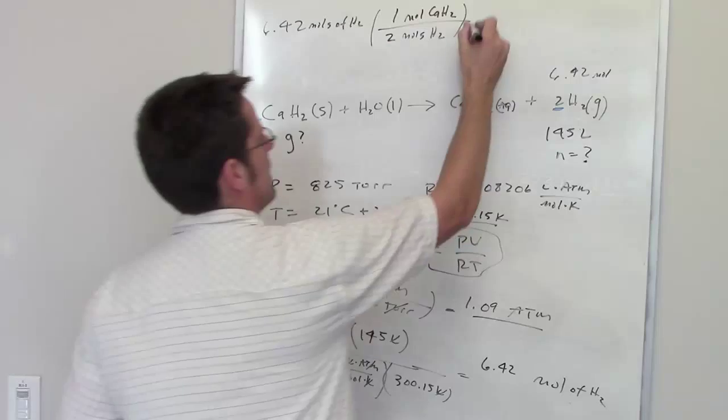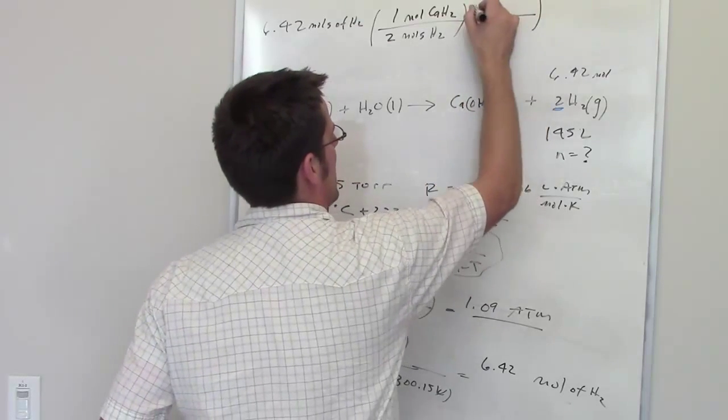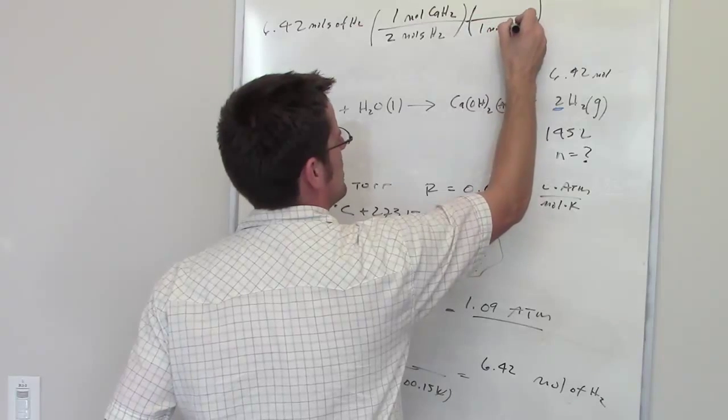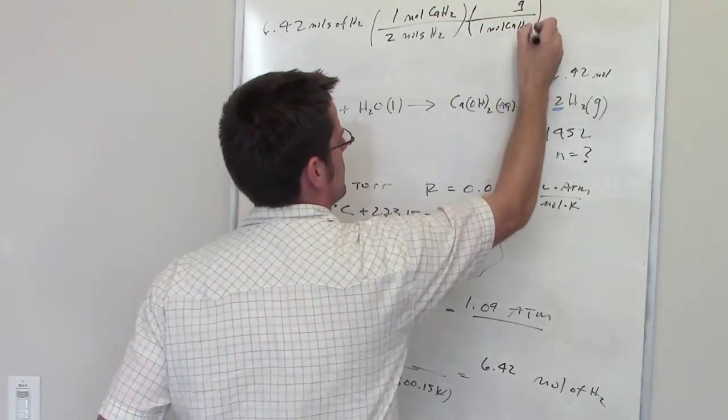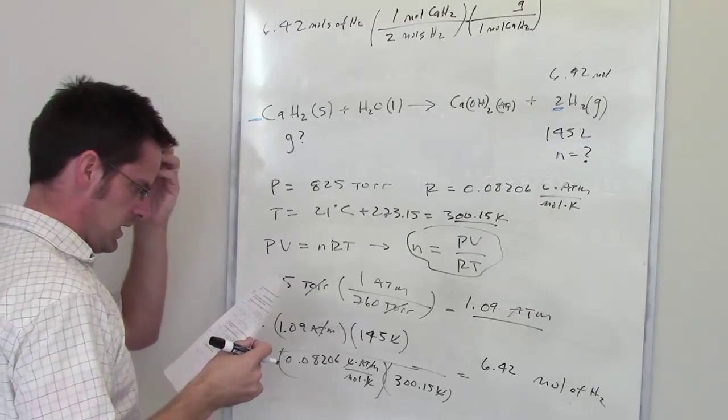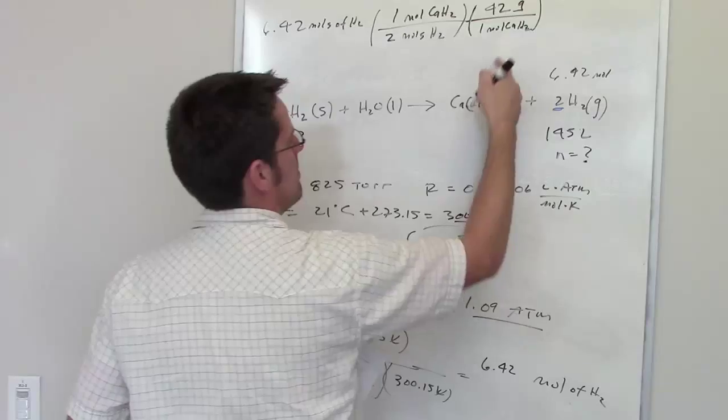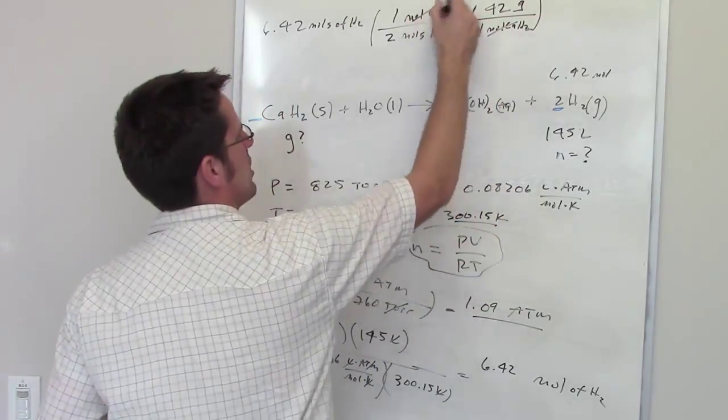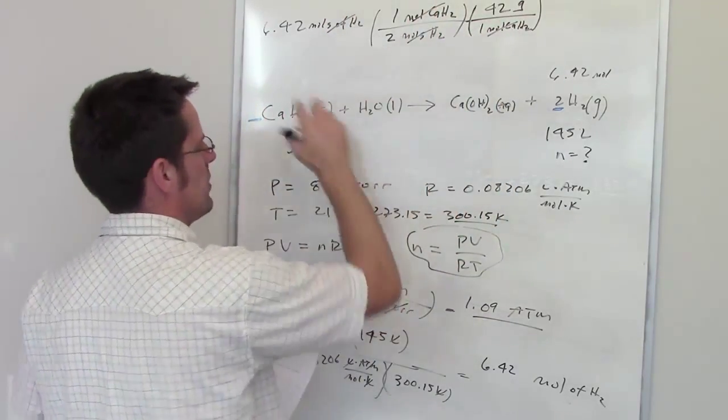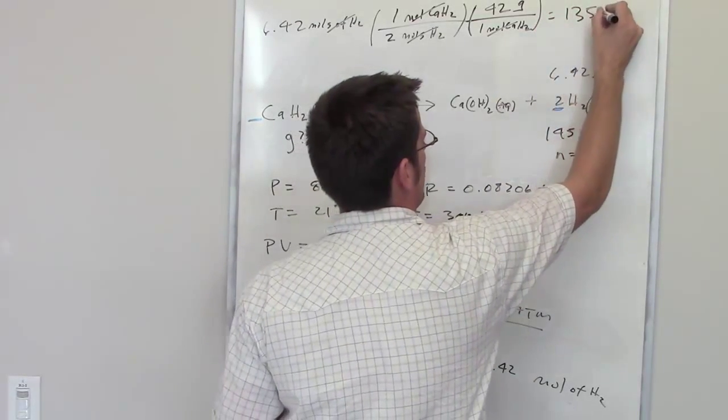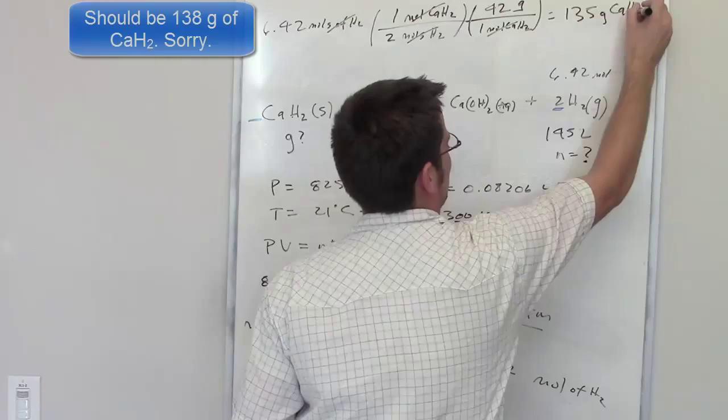I'm not going to stop there, however, because the question asked me how many grams. So I'm going to write down moles. One mole of calcium hydride equals a certain number of grams. That number of grams is 42. So my moles of calcium hydride should cancel each other out. My moles of hydrogen gas should cancel each other out. I times all that through, I end up getting 135 grams of calcium hydride.